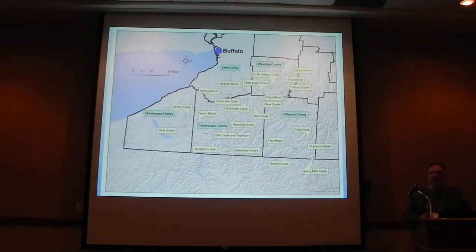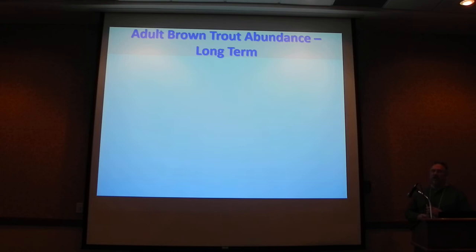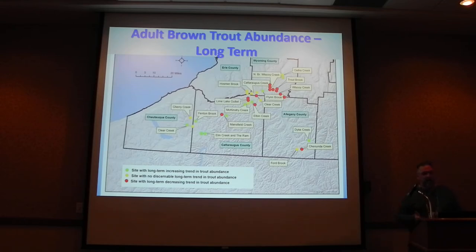We spread the streams out across the region, covering all the trout-bearing portions of Region 9. Looking at adult wild brown trout abundance long-term — meaning all years of sampling available plus 2016 through 2019 — the green dots on the map are sites with long-term increasing trends, red dots are long-term decreasing, and yellow dots show no real discernible trend. We noticed some regional variations.